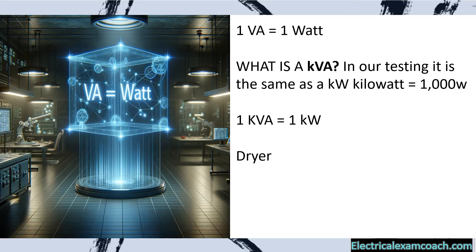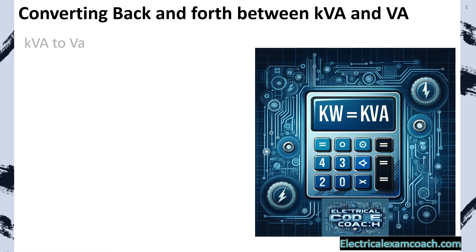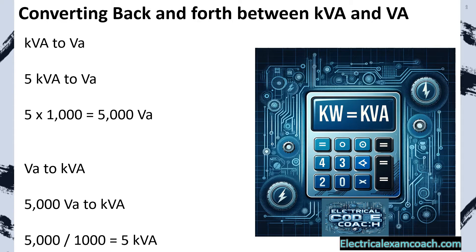Let's imagine we have a dryer that is 5 KW — it's also true to say that it's 5,000 watts. And if they say it was 5 KVA, it's also 5,000 VAs. To convert KVA to VA, multiply by 1,000: 5 KVA equals 5,000 VAs. To go from VA to KVA, divide by 1,000. You'll get very familiar with this, but if you ever forget, that's all you have to do.